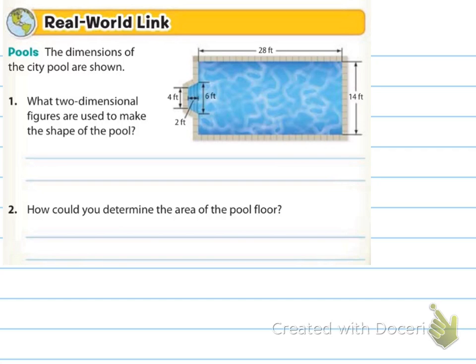Here's a picture of our pool. Some pools are just perfect rectangles, but you notice this one — where the stairs come out — they actually separated that from the original pool, maybe made a little trapezoid there. So when we're finding the area of this pool, it's not as simple as just a rectangle; we're also finding the area for the stairwell. The two-dimensional figures used are the rectangle and the trapezoid.